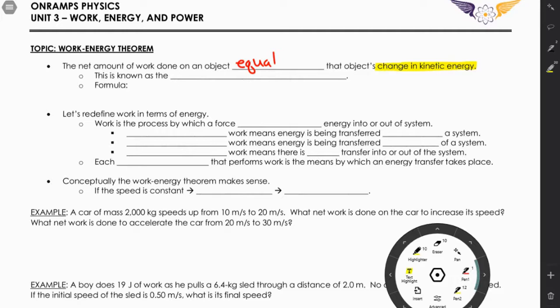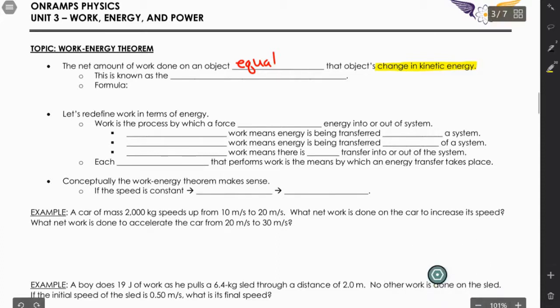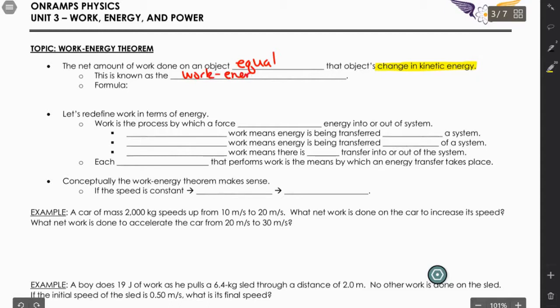The answer is 'change in kinetic energy.' Students sometimes get confused because if your initial velocity is zero, you have no initial kinetic energy, so work equals your final kinetic energy — but technically that is still a change in kinetic energy, because we've set the initial to zero. This statement is known as the work-energy theorem.